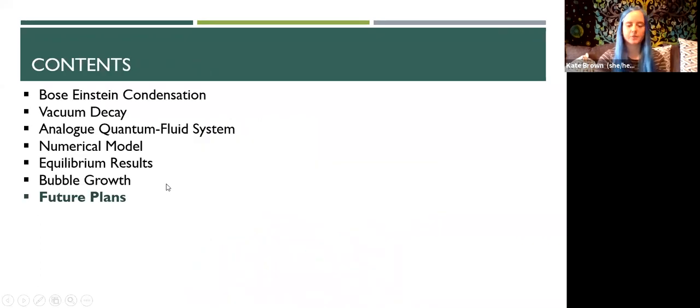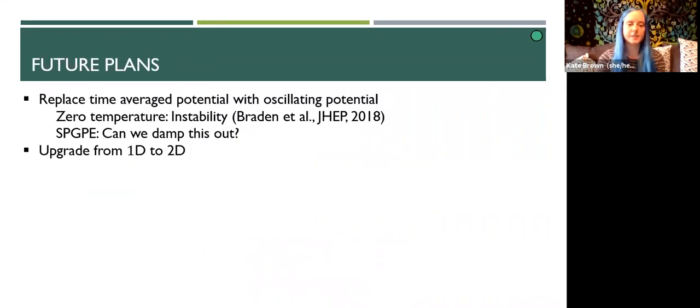So what are our plans for the future? The first thing that we want to do is replace our static interaction potential with an oscillatory potential following this work by Braden et al. They found that using such an oscillatory potential creates instability in a system. And we want to find out if we can use our stochastic projected Gross-Pitaevskii equation to dump out this instability. Looking further forward, our plan is to upgrade our simulations from a one dimensional system to a two dimensional system. And I'm sure that'll bring lots of complications with it.